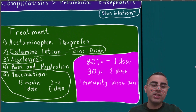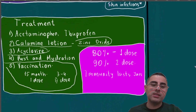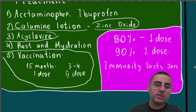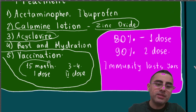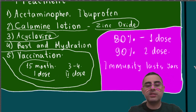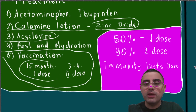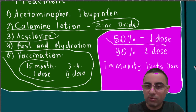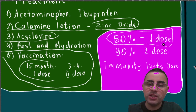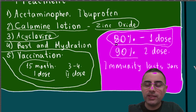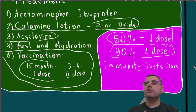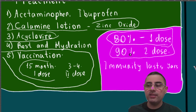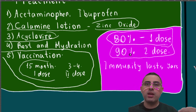Vaccination is most commonly given to children. The first dose is around 15 months of age and has 80% efficacy. The second dose is given three to four months later and has 90% efficacy. The immunity from vaccination can last four years, and in some cases even a lifetime.